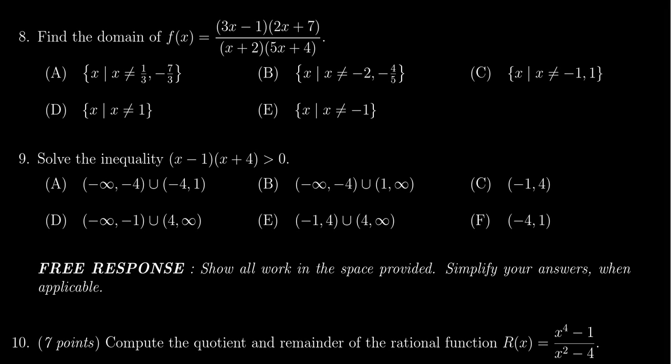In this video, we present the solution to question number 8 from practice exam number 3 for Math 1050. We're given a rational function f of x in factored form: 3x minus 1 times 2x plus 7 over x plus 2 times 5x plus 4. We're asked to find the domain of this function.